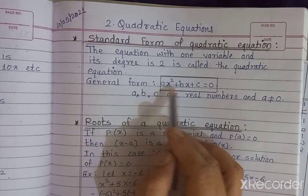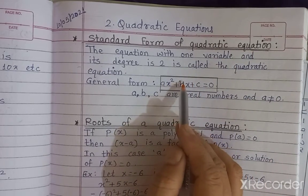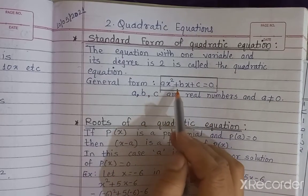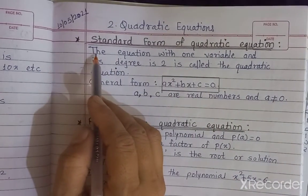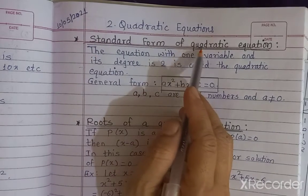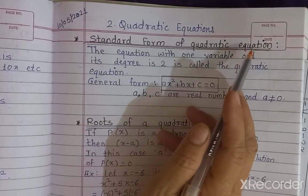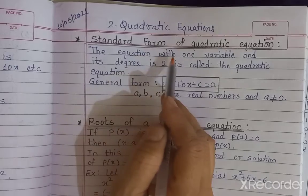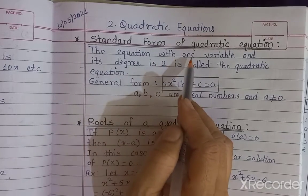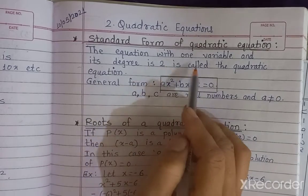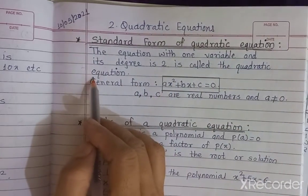Whenever the given polynomial is equal to 0, then this is called an equation. So let's see the definition of the standard form of the quadratic equation. First, we should know what is meant by a quadratic equation. The equation with one variable and its degree is 2 is called the quadratic equation.